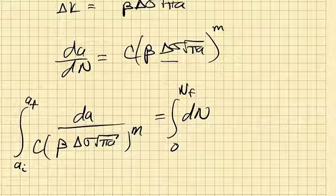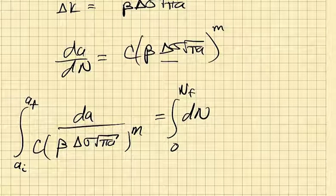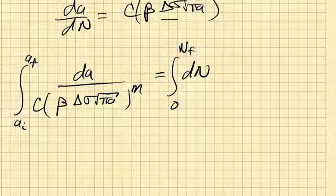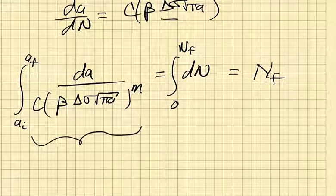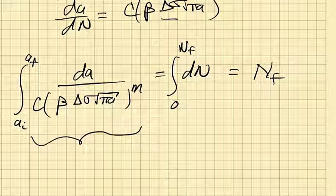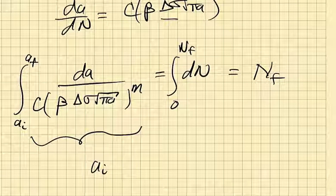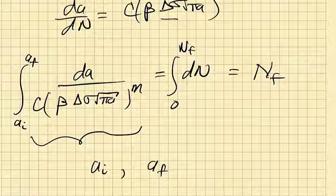And I'm going to go from initial to final crack size. And if I do that, that then allows me to find the number of cycles to failure. All I'm doing is integrating this term right here, where I identified the initial crack size. I calculate the final crack size.